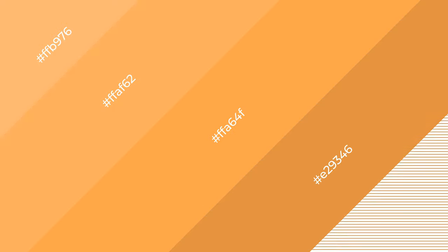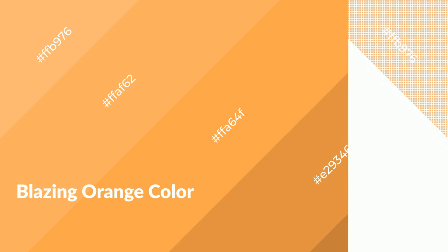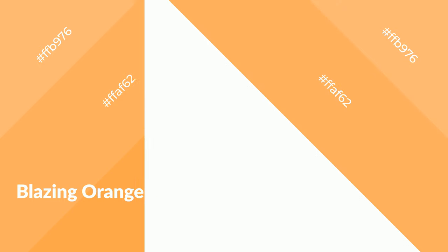To generate shades of a color, we add black to the color. Shades are used in patterns, 3D effects, and layers, and they create depth and drama. Blazing orange is a warm color and it emits cozier and active emotions. Warm colors are symbols of warmth, fire, and heat.